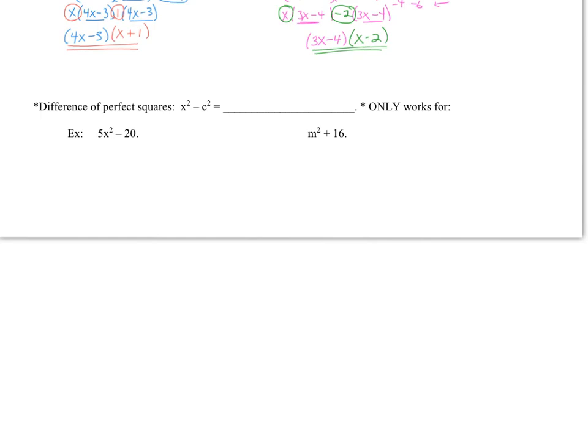The last factoring refresher to go over with you is called the difference of perfect squares. Difference means we're subtracting, and perfect squares means the numbers or the variables that you're using can be broken down to two values that are the same. For example, if you have this template x squared minus c squared, the parenthesis or the factor would break down into two parentheses. We would split the x squared into an x and an x, and then whatever c squared is, we'd split that up into its square root form, so c and c. Now, in between them, we would just have one plus sign and one minus sign. But here's the deal: this only works when you have subtraction.